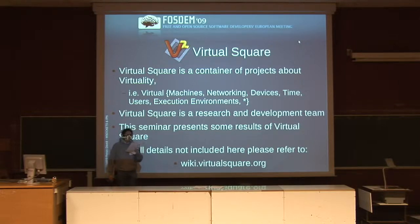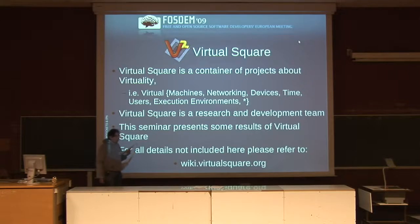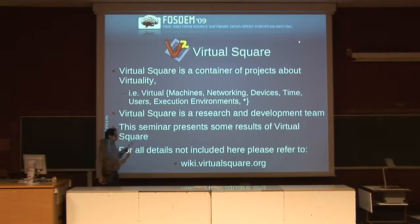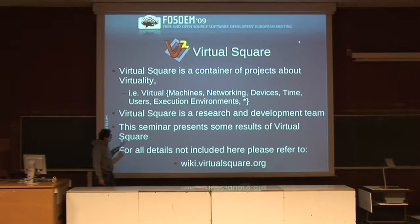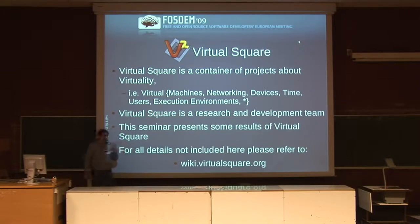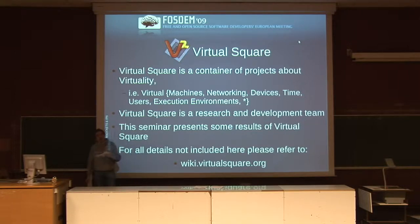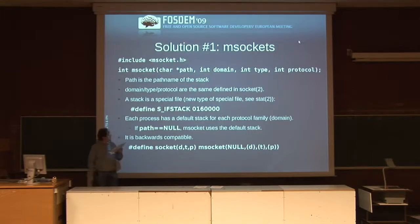The wiki includes examples, example specifications, code internals, and the code itself in source files. Most of the code is already included in many distributions like Debian and others, and the results are included in many projects. For example, you may have seen yesterday VDE, which is included in the Marinette. We presented last year VOS during virtual square. Studying virtualization, we ran into some limitations imposed by the current implementation of the Berkeley socket API, and this talk represents the solution we proposed and implemented. I want to emphasize that these are general solutions, not just limited to virtual machines — they are useful for common applications too.